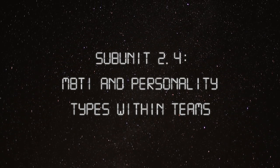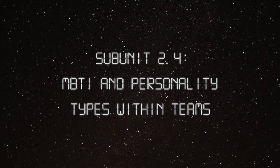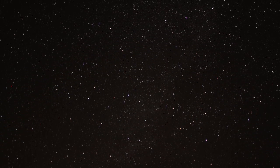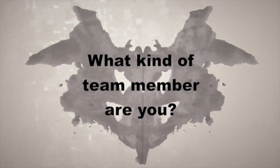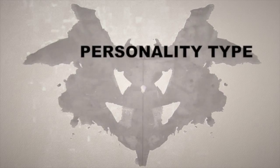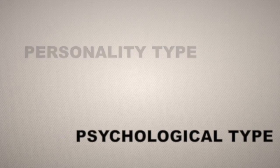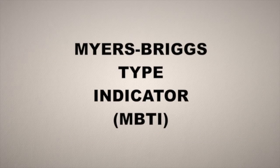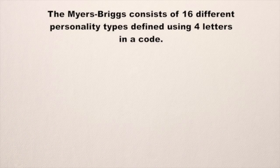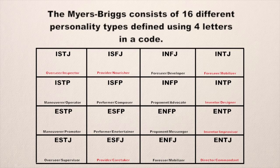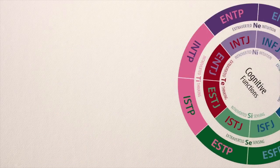Subunit 2.4: Myers-Briggs Type Indicators and Personality Types Within Teams. This section is going to focus on what kind of team member you are and how you fit into the broader team. Personality type and psychological type are terms commonly associated with the personality development and inventory known as the Myers-Briggs Type Indicator. The four letters are derived from four pairs of preferences, and as you go through your Myers-Briggs assessment, you'll look at what these letters mean.